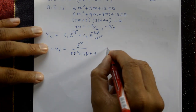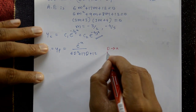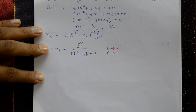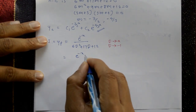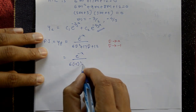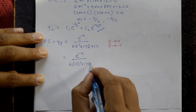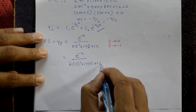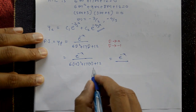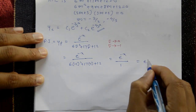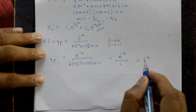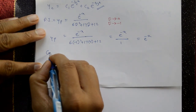This is Type 1: put D = a = -1. So yp = e^(-x) / [6(-1)² + 17(-1) + 12] = e^(-x) / [6 - 17 + 12] = e^(-x) / 1 = e^(-x). So yp = e^(-x).